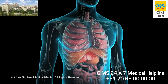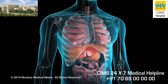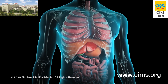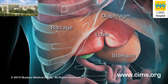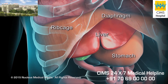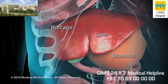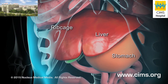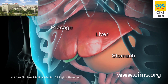Your doctor may obtain a liver biopsy to determine the cause of liver disease and the extent of the damage. The liver is located in the upper right abdomen, just under the diaphragm. It lies almost entirely within the rib cage, which provides some protection to the organ.